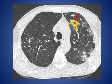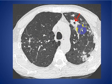In this TB case, you can see a thick-walled cavity in the left upper lobe with multiple nodules, tree-in-bud pattern, and some cystic changes.